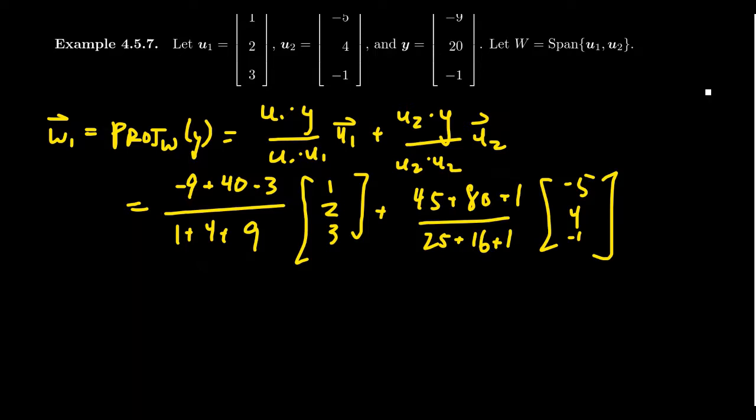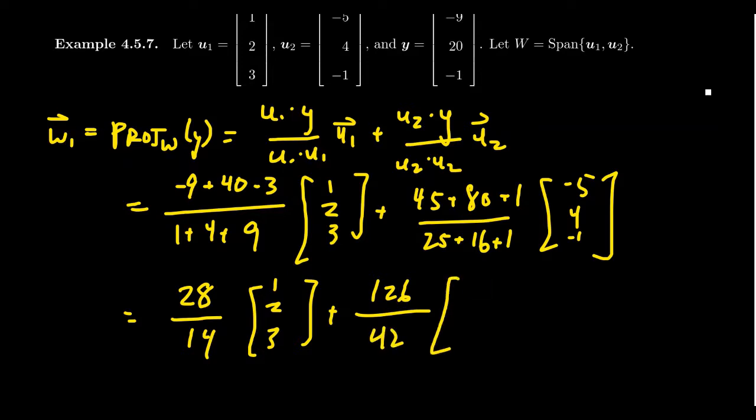And so we're going to get 40 minus 9 minus 3, that turns out to be 28. 1 plus 4 plus 9 is 14, times the vector [1, 2, 3]. And then for the second one, 45 plus 80 plus 1, that turns out to be 126, and then 25 plus 16 plus 1 is 42. So we get [-5, 4, -1].